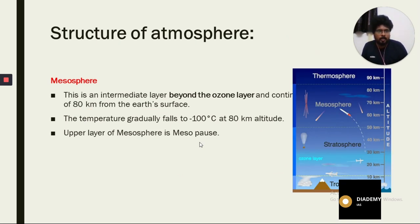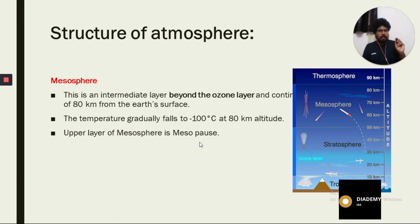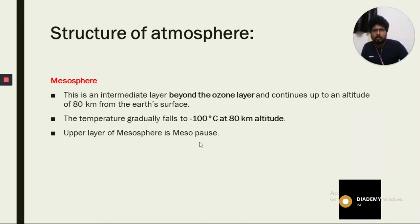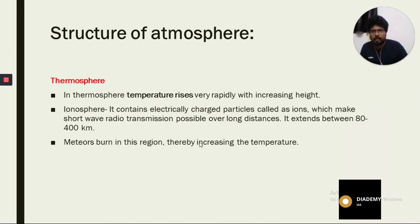In this diagram, the troposphere extends to an average height of 13 kilometers. Then we have the stratosphere up to 30 to 40 kilometers. After that, the mesosphere extends up to 70 to 80 kilometers. Beyond that is the thermosphere.